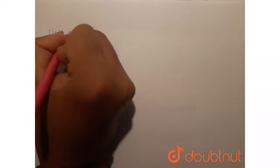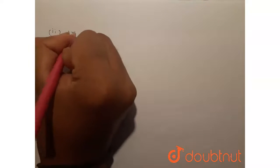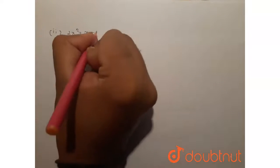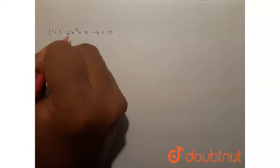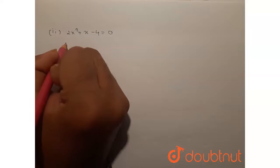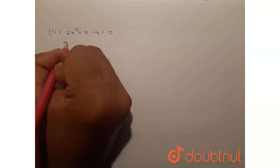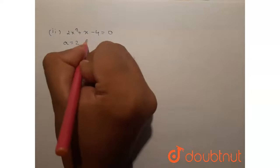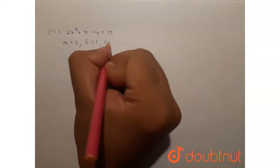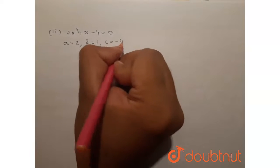Now let's move on to the next question, which is 2x squared plus x minus 4 equals 0. Again, comparing with the standard equation ax squared plus bx plus c equals 0, we have a equal to 2, b equal to 1 and c equal to minus 4.